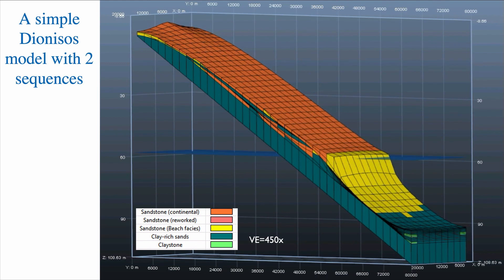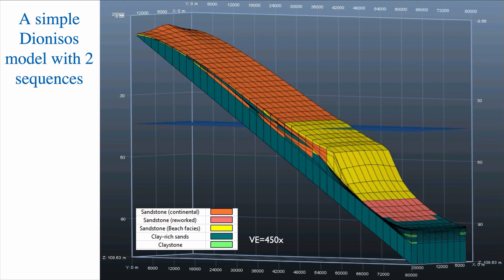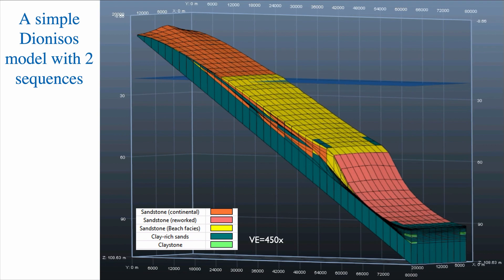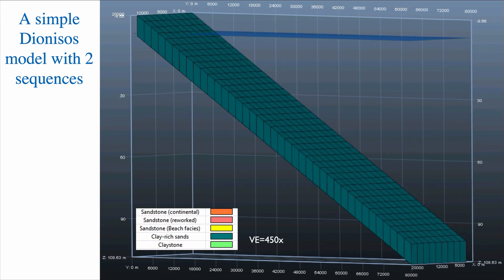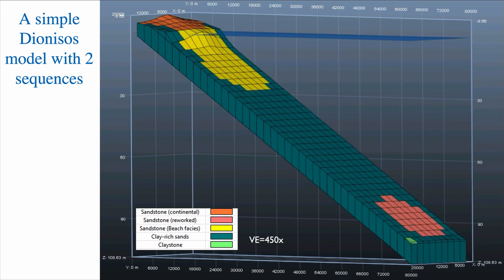The goal for us will be to dissect this model and look in detail at the different sequences we find inside. We'll use this numerical model to dissect it, look at the different sequences, and very importantly, look at the system tracts inside this model. We're going to take that slowly, step by step.